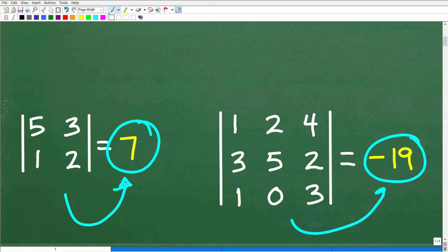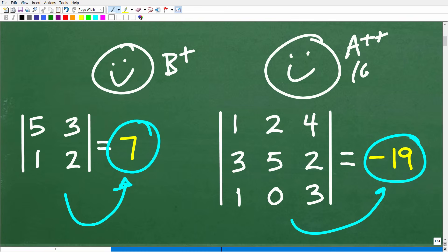If you got both of these problems correct - let's do this. If you knew how to do the two by two, I'll give you a nice happy face and a B plus because it's super easy. But if you were able to get this three by three right, I'm giving you a big happy face, an A++, 100%, and multiple stars. You can tell your friends and family that you understand how to calculate the determinant of various matrices.